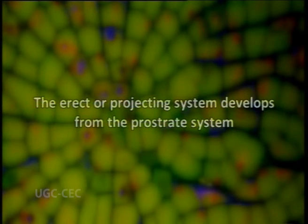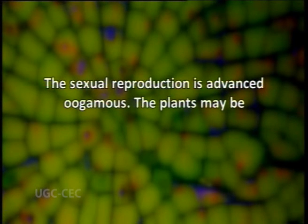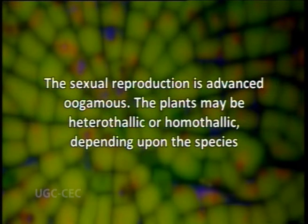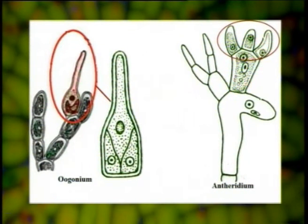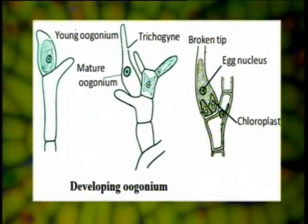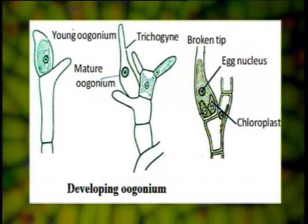Now we come to sexual reproduction. In Coleochaete, sexual reproduction is of an advanced oogamous type. The plants may be heterothallic or homothallic depending upon the species. The female sex organs are called oogonia or carpogonia, and the male reproductive organs are called antheridia. The oogonia or carpogonia develop at the terminal end of the lateral branch of the projecting system in erect species like Coleochaete pulvinata.